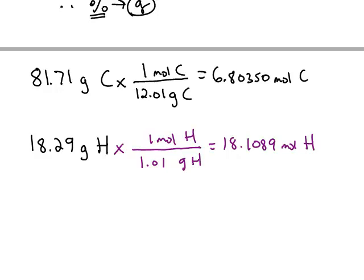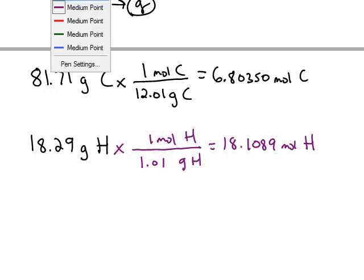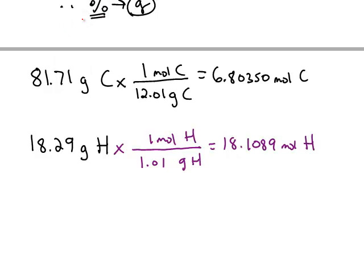So starting from percents, we turn them into grams. Once we have grams, we use the periodic table to turn them into moles. And now once we have moles, the moles are directly related to the subscripts in the chemical formula.